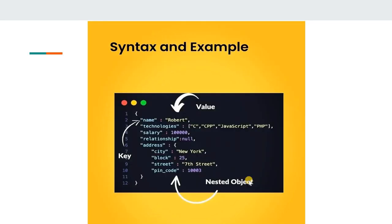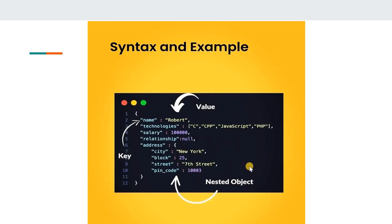This is a simple example of JSON syntax. As you can see here, this is the format of JSON. It comes with a key and value pair — the first part is the key and the other part is the value, and both are in string format. This is a very simple example of a JSON string, showing data in JSON string format.